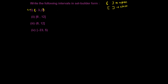How do we write this in set-builder form? If this is set A, then: x such that x belongs to real numbers, and x is greater than minus three but smaller than zero. We are not including minus three and zero, so it's just greater than minus three and smaller than zero.